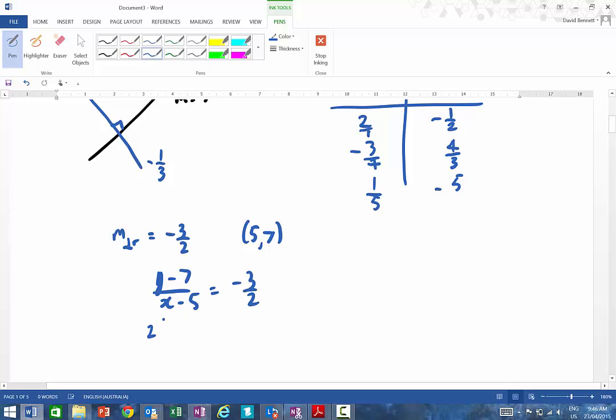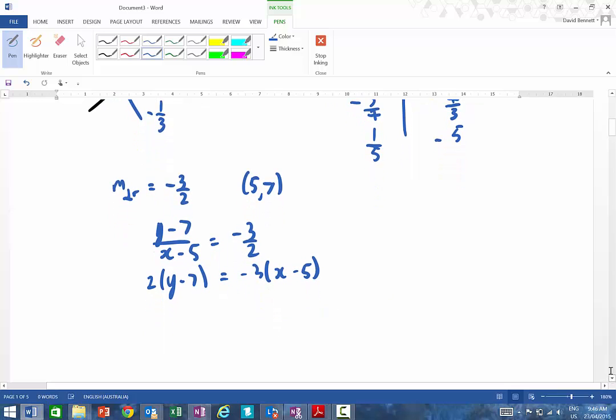I'm going to go 2, y minus 7 equals minus 3, x minus 5. Now, remembering you can miss this step. So you can then go to the next bit and say it's 2y minus 14. So you can go straight to that step, minus 3x plus 15. So, therefore, now I can rearrange this in one step as well. Bring the 14 across, that becomes plus. So it's minus 3x plus 29. And that's all over 2, and that's all over 2.